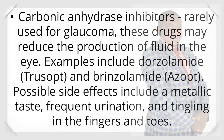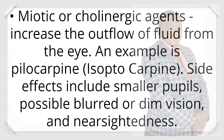Carbonic anhydrase inhibitors are rarely used for glaucoma; these drugs may reduce the production of fluid in the eye. Examples include dorzolamide (Trusopt) and brinzolamide (Azopt). Possible side effects include a metallic taste, frequent urination, and tingling in the fingers and toes. Miotic or cholinergic agents increase the outflow of fluid from the eye. An example is pilocarpine (Isopto Carpine). Side effects include smaller pupils, possible blurred or dim vision, and nearsightedness.